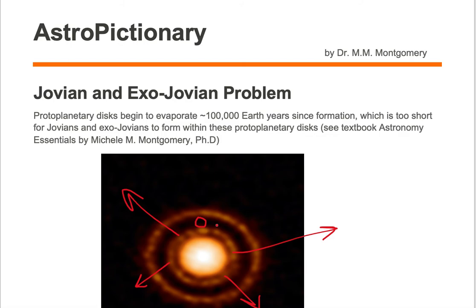And the forming protoplanet — the Jovian here in this system — takes longer than 100,000 Earth years to form. We call this the Jovian and exo-Jovian problem.